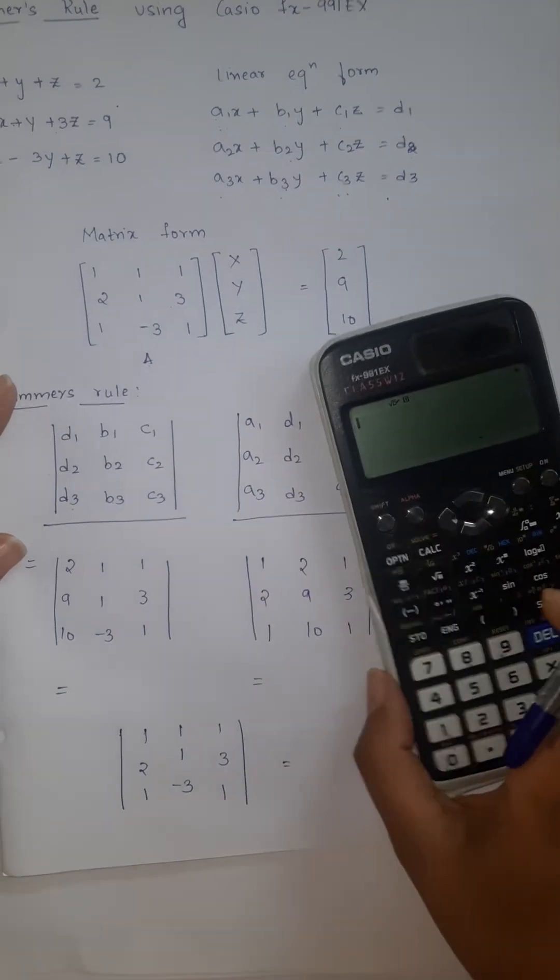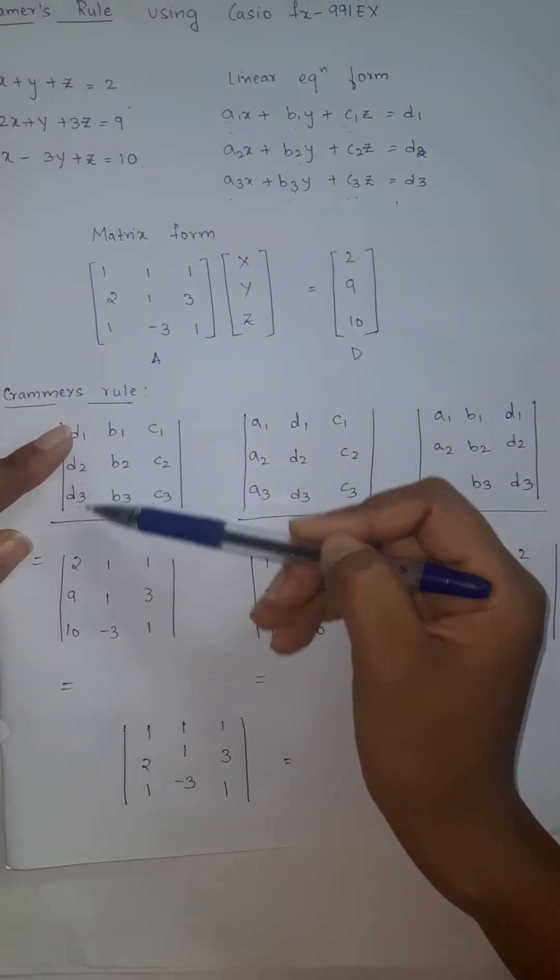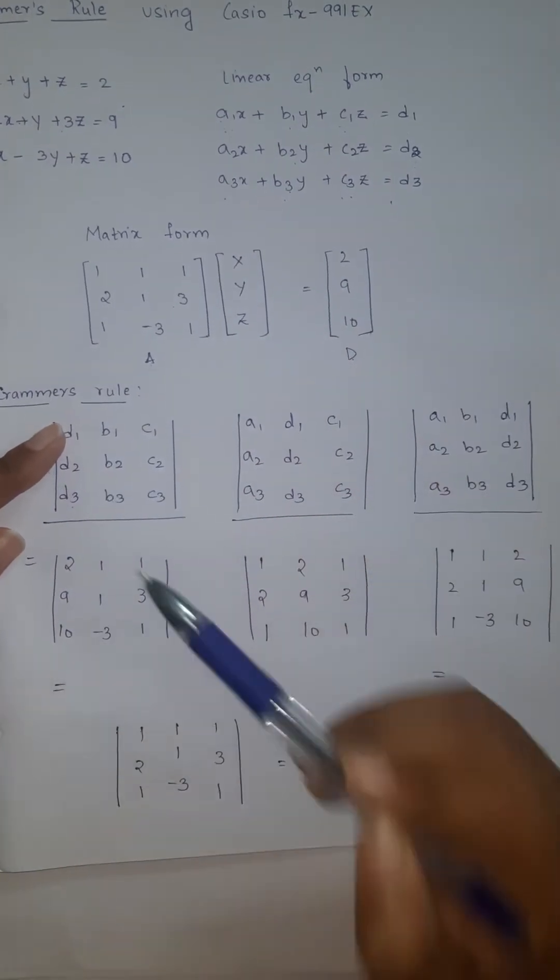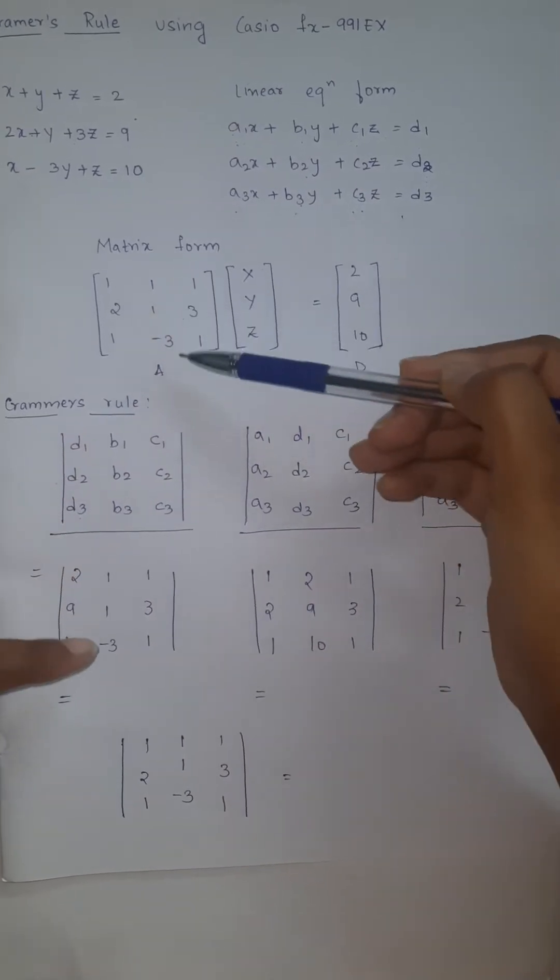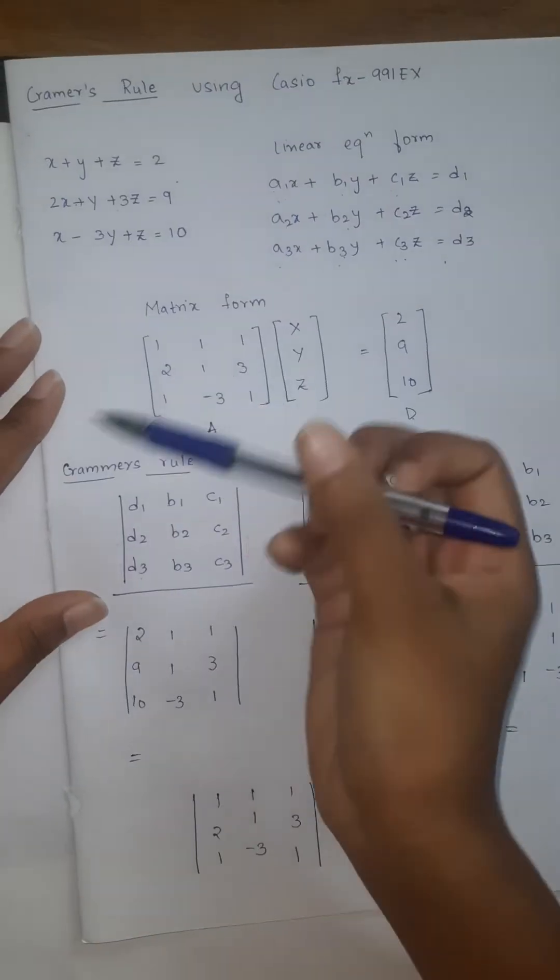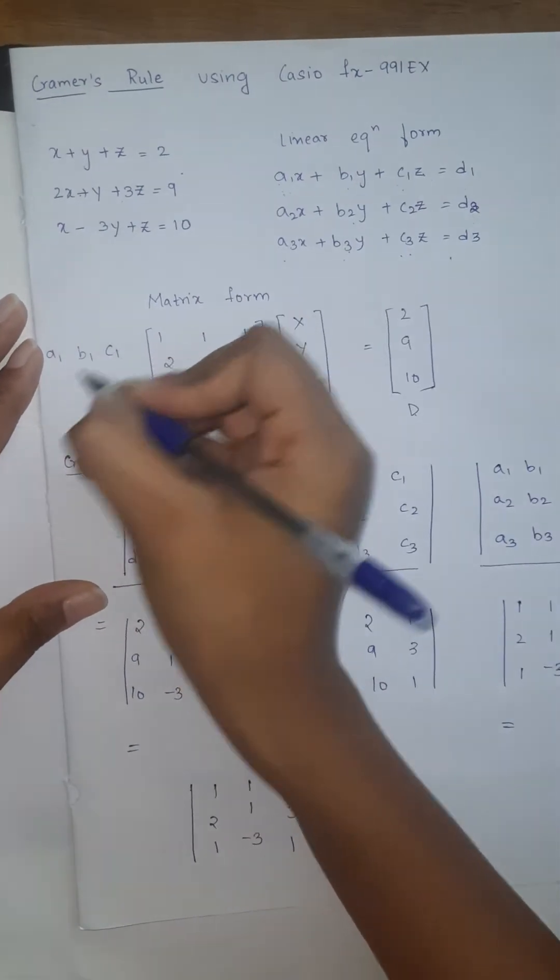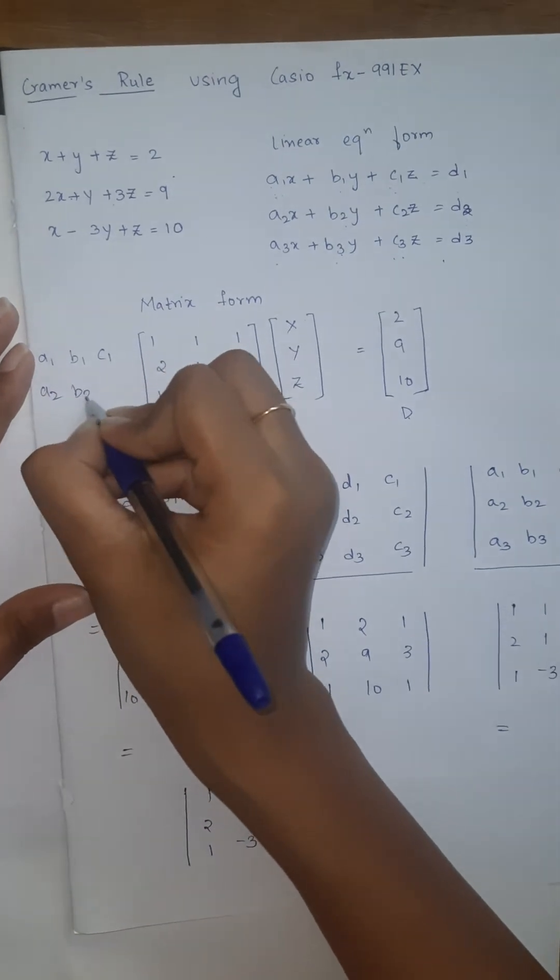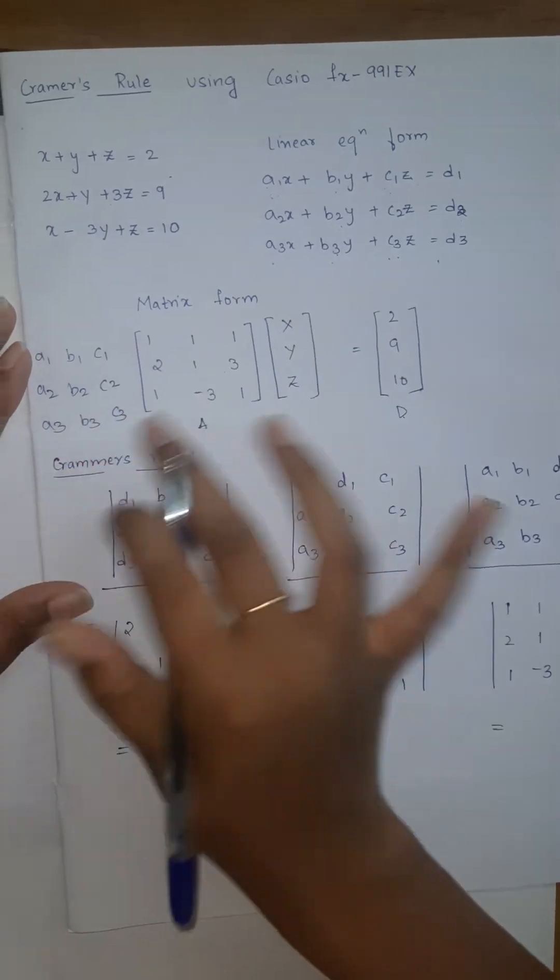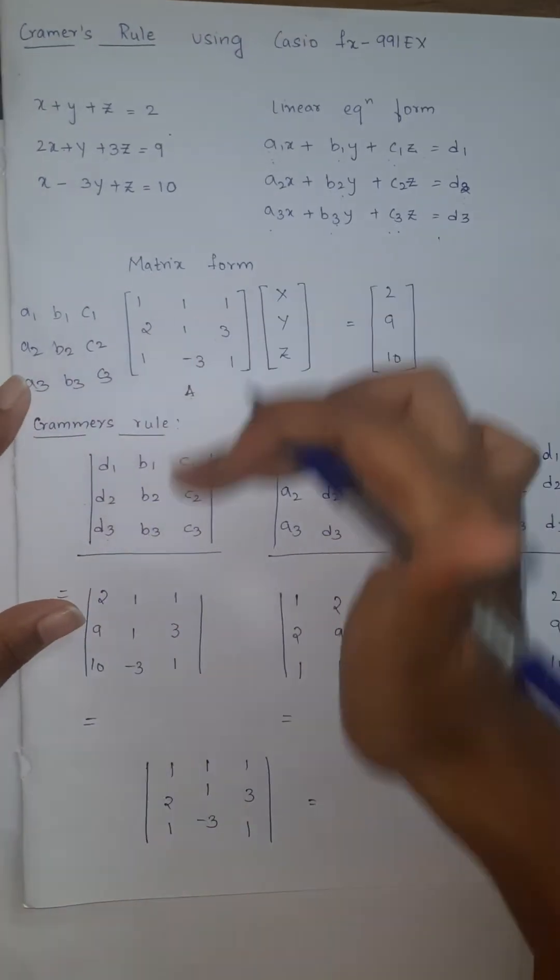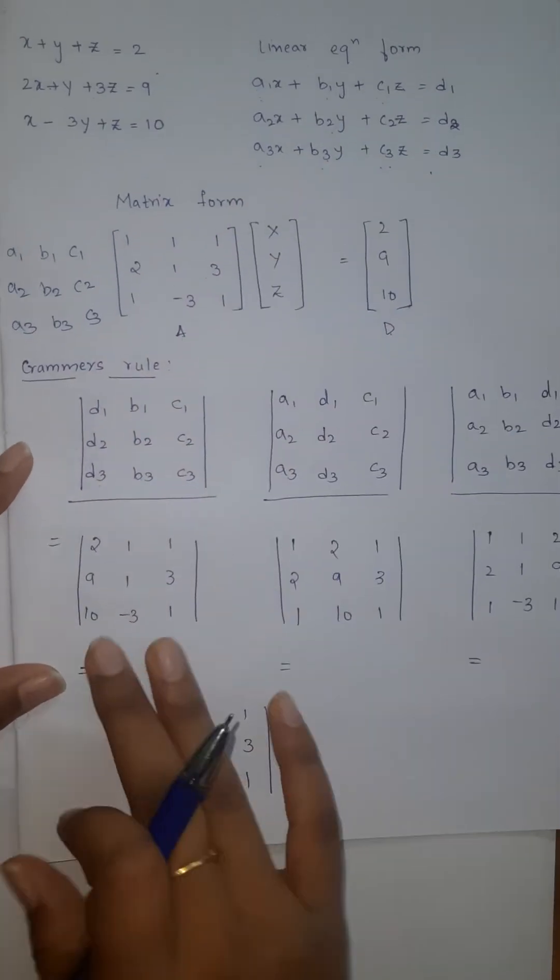For finding determinant we are using the Casio calculator. D1, D2, D3 is 2, 9, 10. B1, B2, B3 is here we can find 1, 1 minus 3. This you have to remember it is in this form A1, B1, C1, A2, B2, C2, A3, B3, C3. Looking at this you can easily fill these values. Now we have written all the matrices.